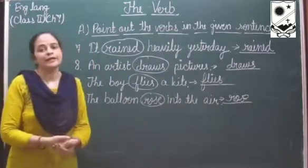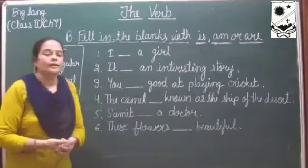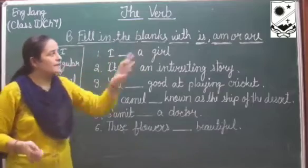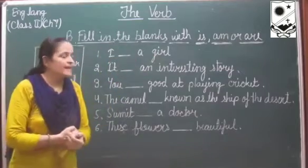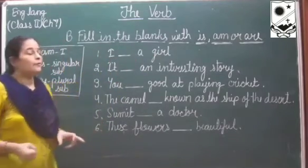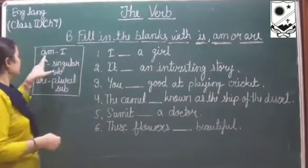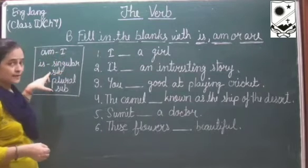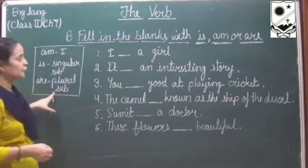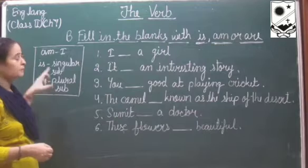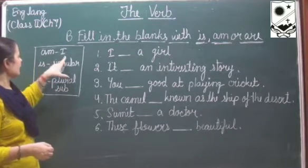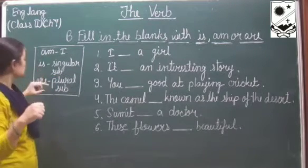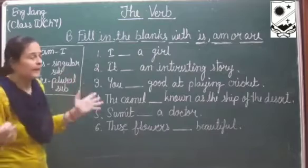Now let's move on to the next exercise. Question B: fill in the blanks with is, am, or are. We know that we use am with I, is with a singular subject, and are with a plural subject. So am is with I, is is with one, and are is with many.